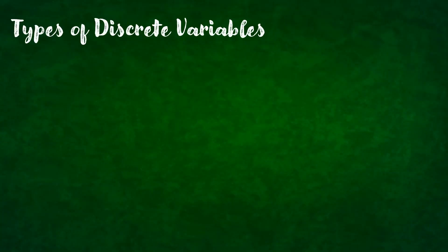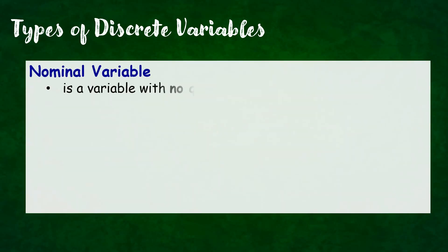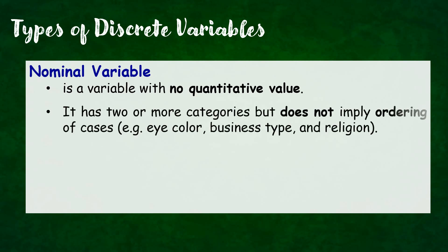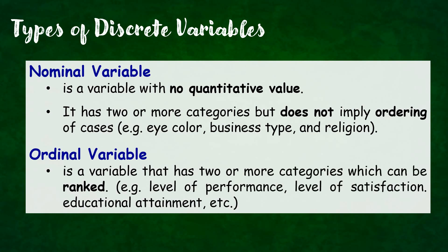Discrete variables can also be further classified into two types. We have nominal variable — it is any variable with no quantitative value. It has two or more categories but does not imply ordering of cases, like eye color, business type, and religion. While ordinal variable is any variable that has two or more categories which can be ranked. For example, level of performance, level of satisfaction, educational attainment, and so on. Para madaling intindihin, basta pag sinabi mong nominal variable, ang order ay hindi mahalaga. Pero kapag sa ordinal variable, kailangan nakaayos ang mga variable mo — pwedeng highest to lowest or lowest to highest. Laging nakarank ang mga variables mo dito.